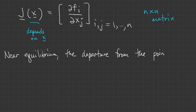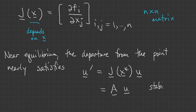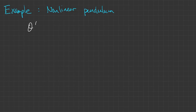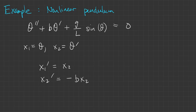To summarize: near an equilibrium point, the deviation from equilibrium nearly satisfies a linear system of equations with a constant matrix A, and we know all about finding the stability of that kind of system. For example, consider the nonlinear pendulum. Using the usual change of variables, we can rewrite it as a first-order system, and that defines our F1 and F2.